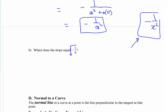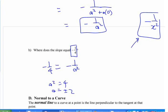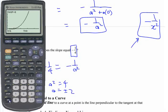Where does the slope equal negative 1 quarter? According to this, where would it be? Negative 1 quarter equals negative 1 over A squared. Where should it be? Plus or minus 2, right? A squared equals 4. A is plus or minus 2. If you don't believe me, you can test it out with your calculator or whatever thing you're using for graphing.